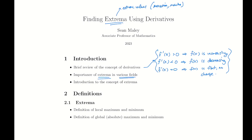Why do we care about extrema? We care about them because we care about max and min values and about optimizing a process — this can be in the world of business, engineering, physics, or chemistry. Optimizing means maximizing the output of something and minimizing the cost or inputs. Finding these maximum and minimum values is important; usually these are done by a computer, but we need to be able to interpret the output and understand how it comes up with these answers. An extremum simply means a value that is higher or lower than nearby values.